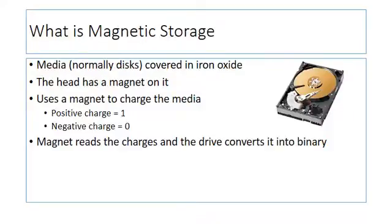So what is magnetic storage? Magnetic storage is a type of storage which has been used for computers and other electronic devices a lot in the past, but it's starting to be phased out slowly now. This is purely because the technology now available for storage mediums is getting more reliable and more efficient, as covered in other videos. The media — normally discs — are covered in iron oxide, and as you can see in the picture, they are actual discs, little pieces of metal which all the data gets stored on.